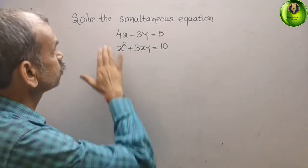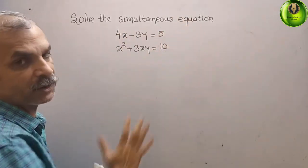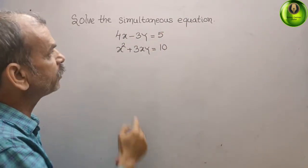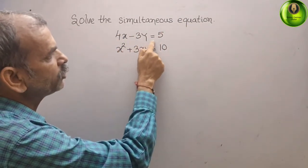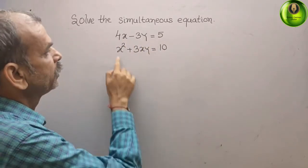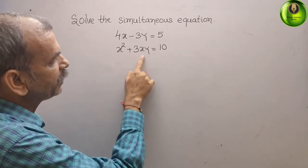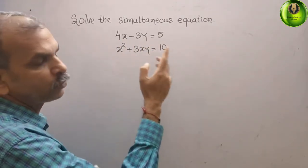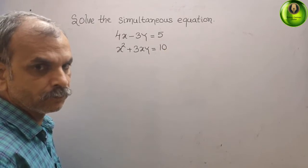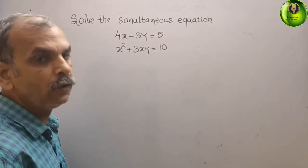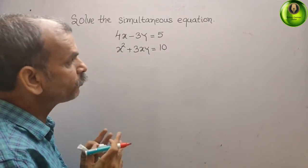Solve the simultaneous equations. They have given: 4x minus 3y is equal to 5, and x squared plus 3xy is equal to 10.